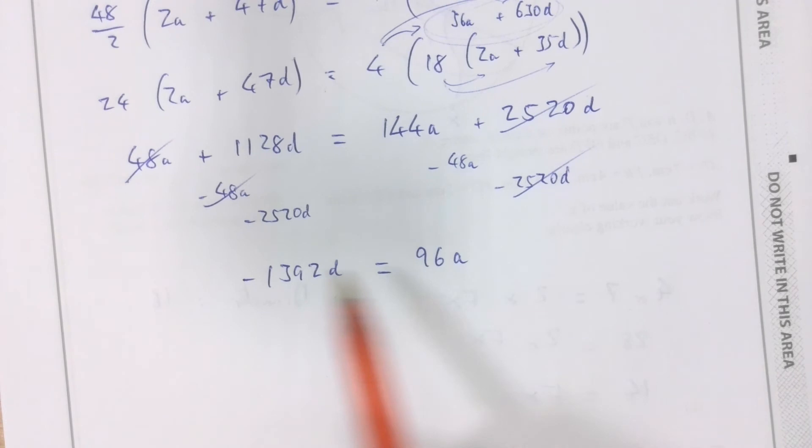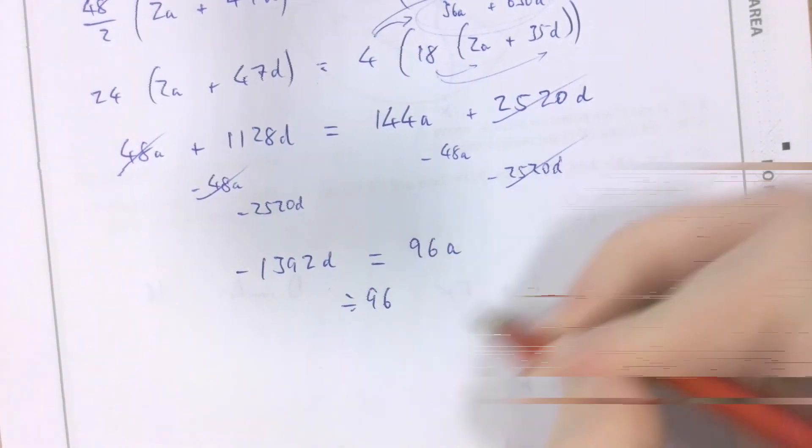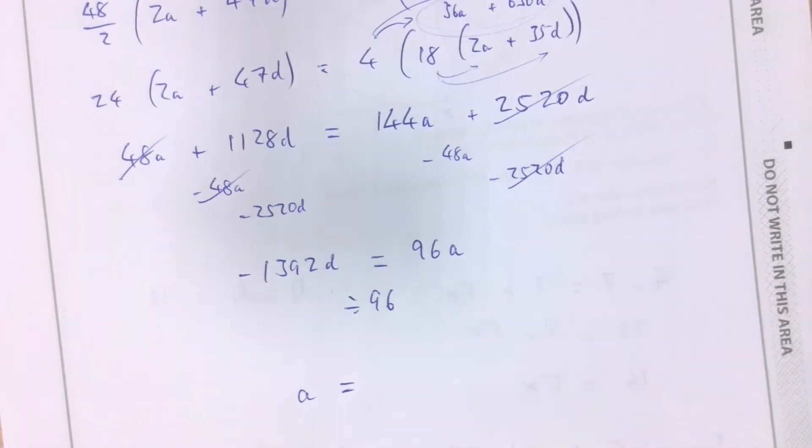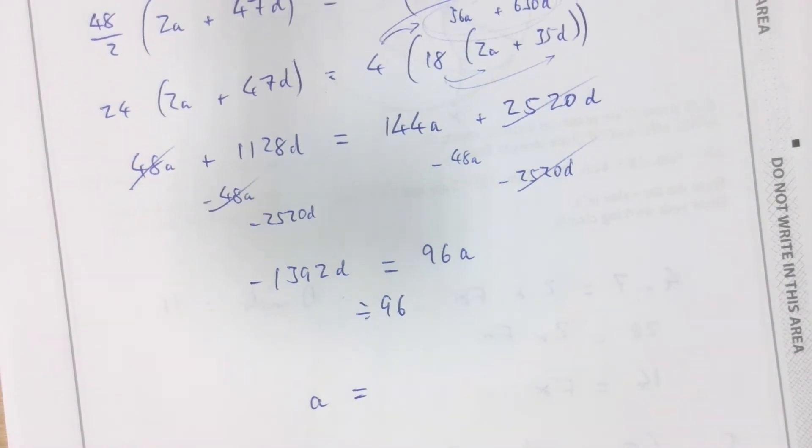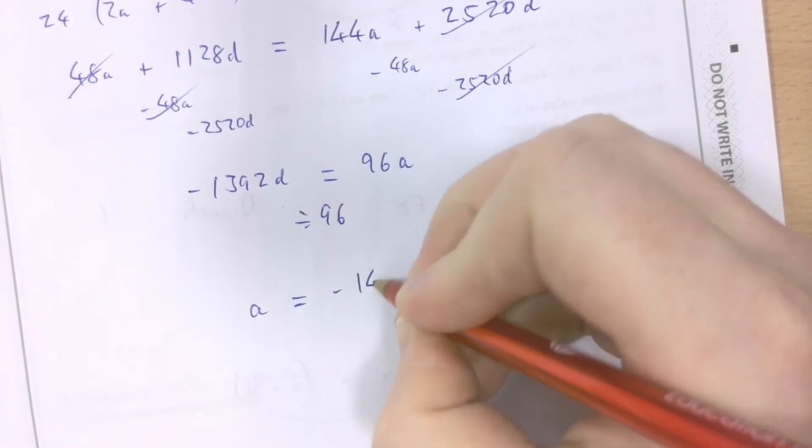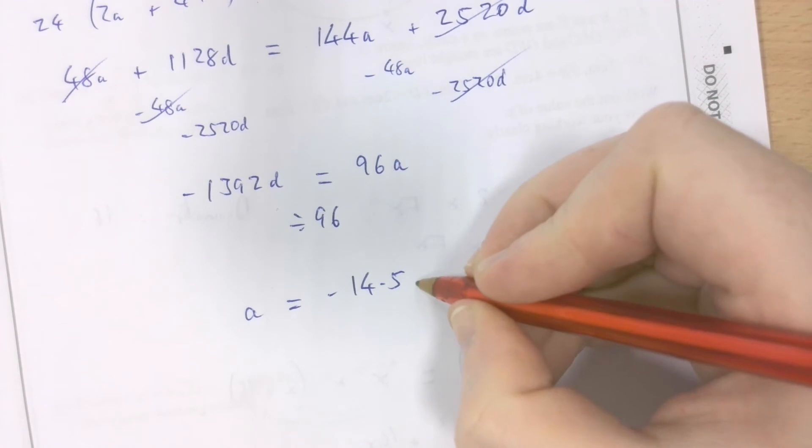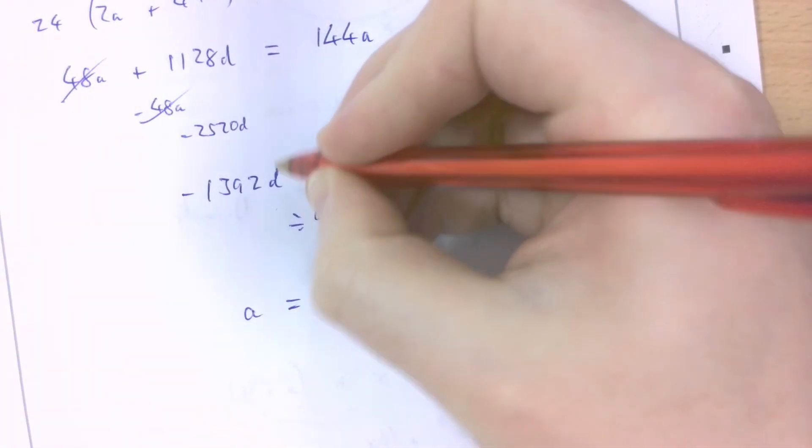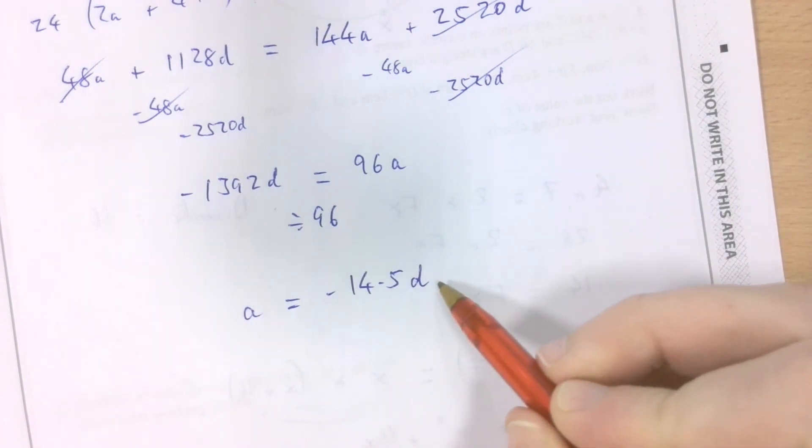Now, if I divide both sides by 96, I get a on its own. So, having done so, a equals negative 1392 divided by 96. Excuse me, just bear with me for just that tiny moment it takes to put this in the calculator. Negative 14.5. Negative 14.5d, I should say. Negative 1392d divided by 96 makes negative 14.5d.